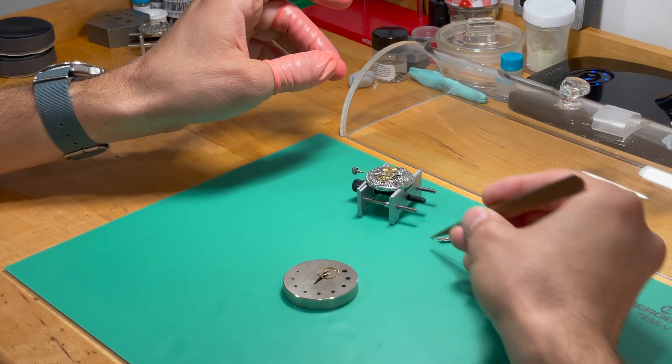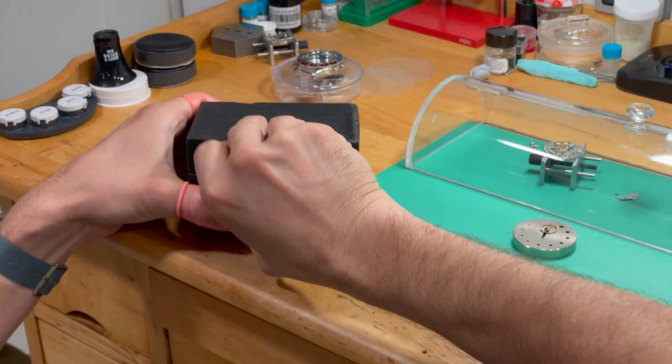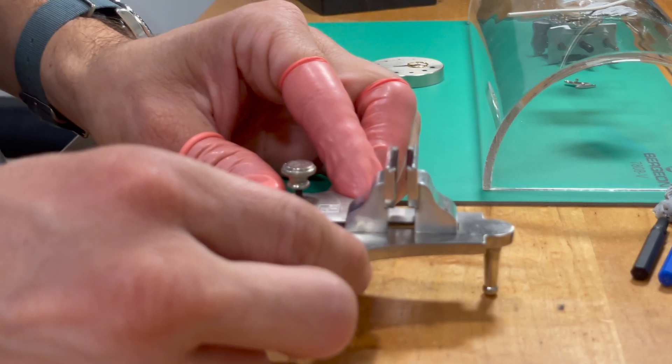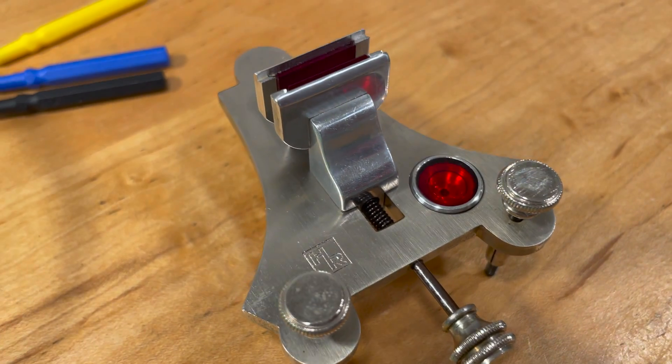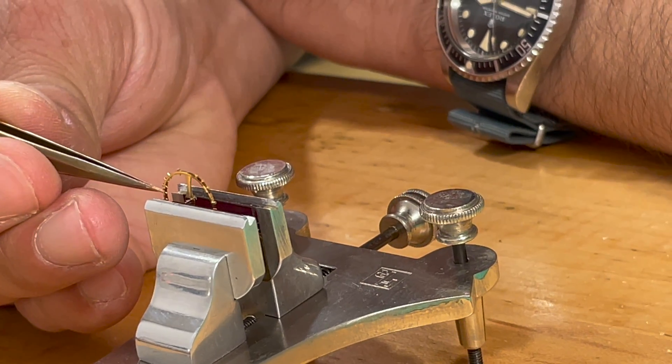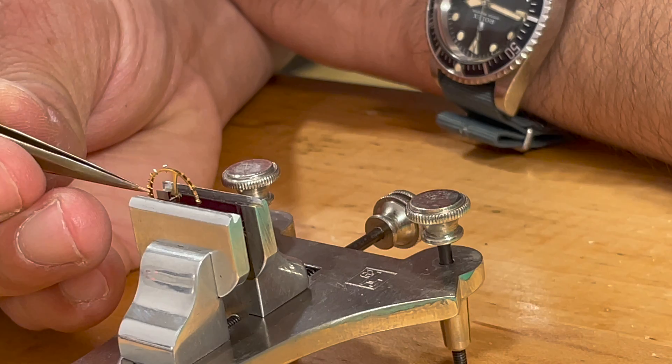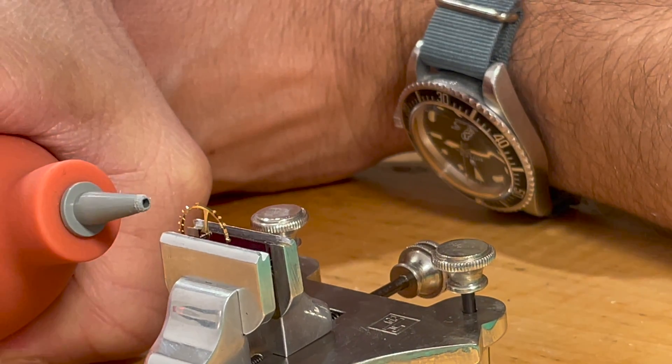Now we're going to get our poising tool out. This tool has been quite important. It effectively has a level, and you need to make sure that it levels up properly. Once you get it level, then you can put your balance on and start the process of spinning it, which can be very, very tedious.